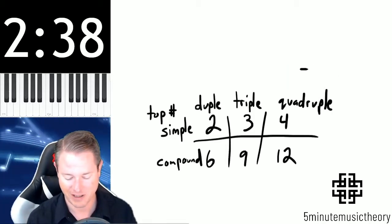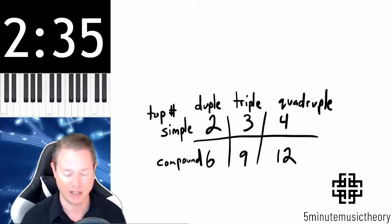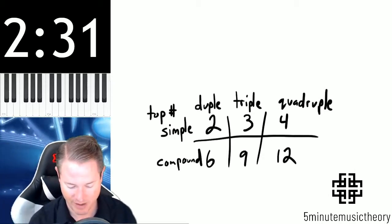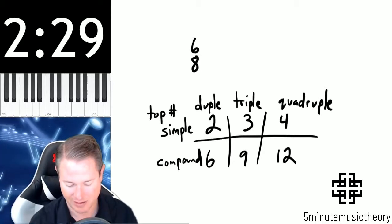So as you might figure, something that's in duple meter would have 2 beats per measure. Something triple would have 3. So let's take a really common compound time signature, 6/8.